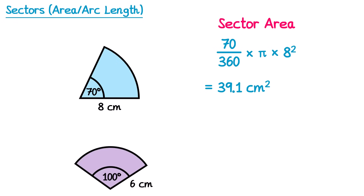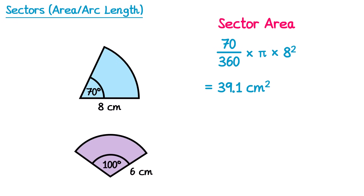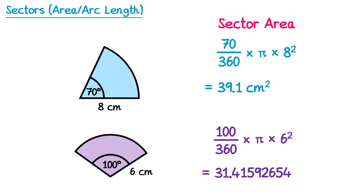Let's try a second example. For this sector, we're once again going to imagine it's a full circle with radius 6cm. To do its area, I do pi times 6 squared. But we don't have a full circle — we have a sector, so the fraction of the circle we have is 100 out of 360. Multiplying this by the area of the circle gives 31.4 centimetres squared.